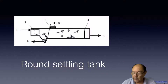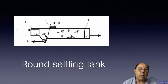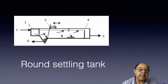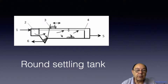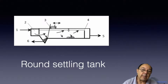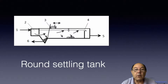This is another type of settling tank — a round one. If you could imagine this is a section through a round tank: this is the centre, so this is the inlet, and this here is the distribution channel. This is the sludge screw — this thing travels backwards and forwards gathering the sludge and bringing it into the sludge collection point here. This is the overflow weir and here is the discharge point.